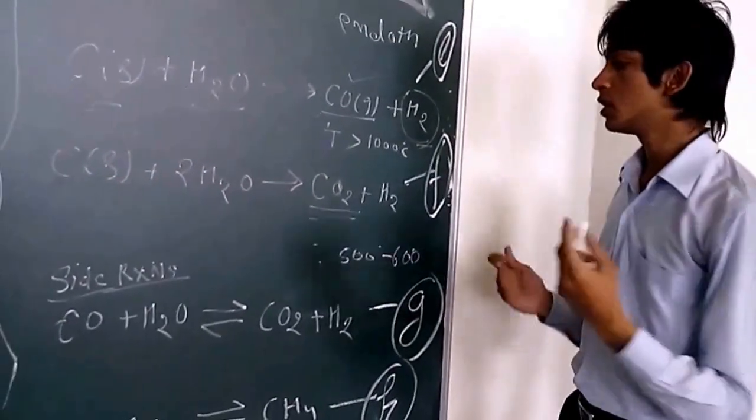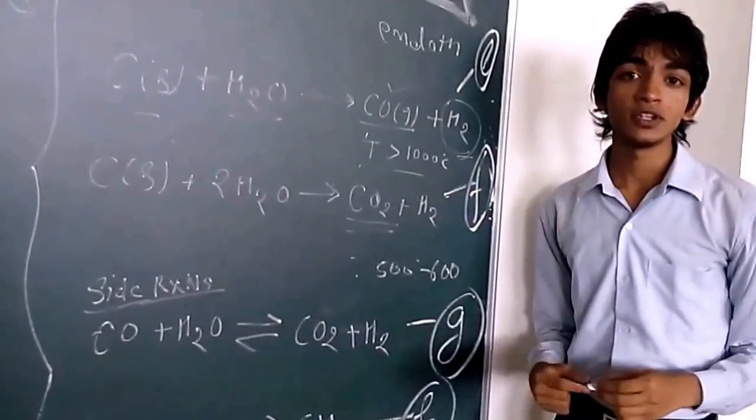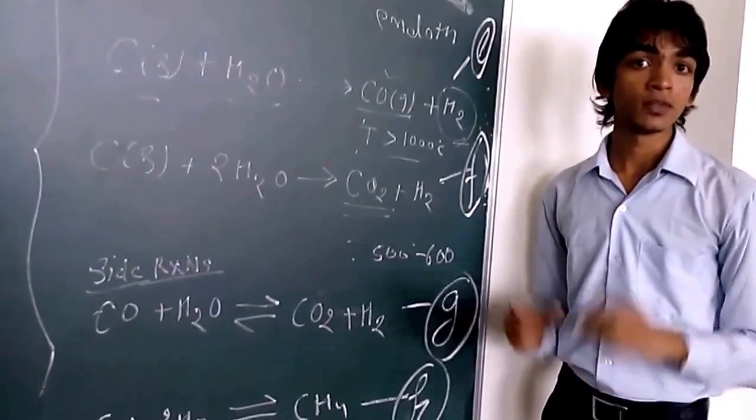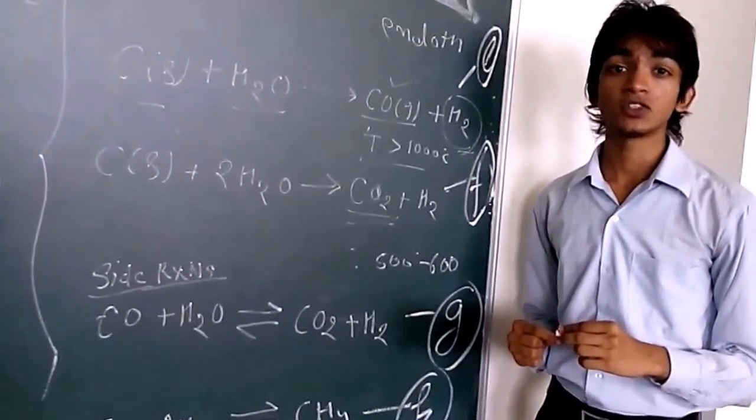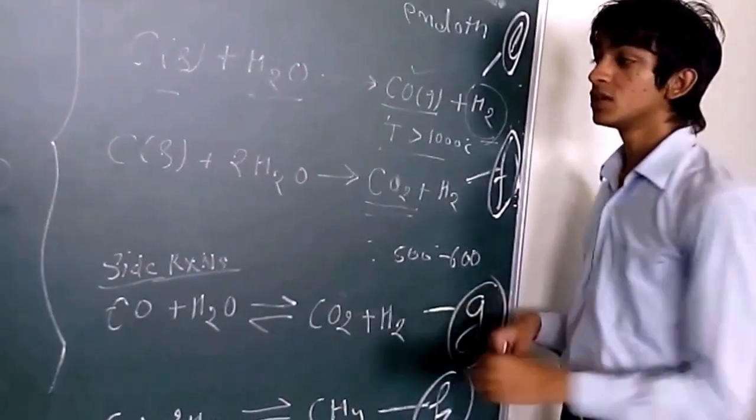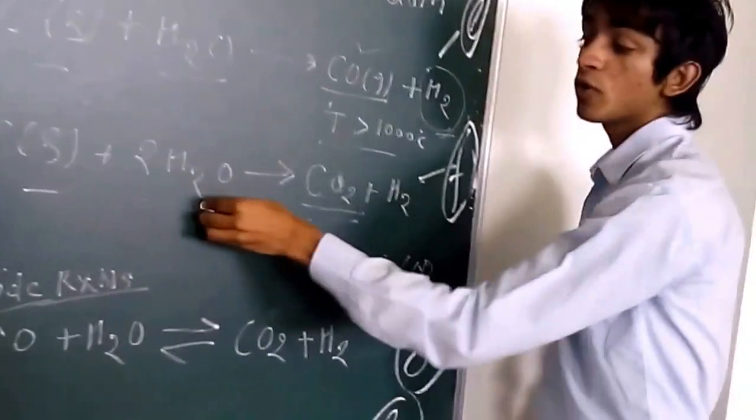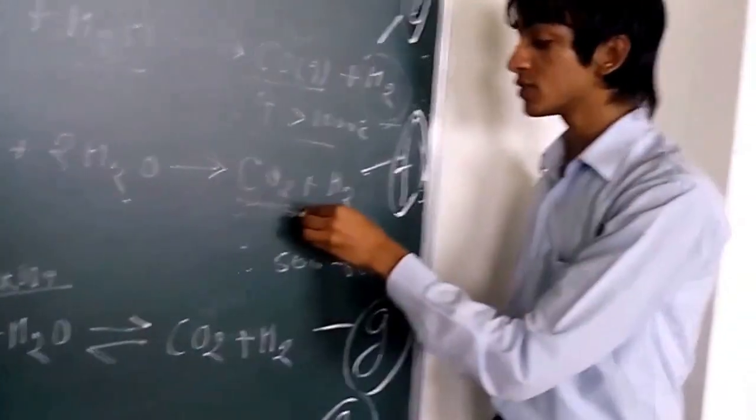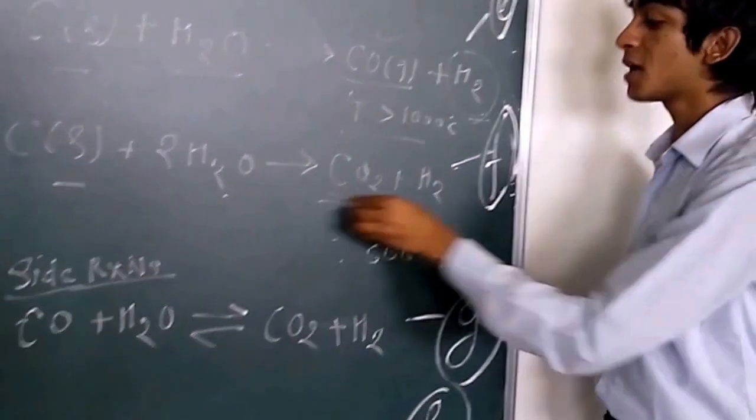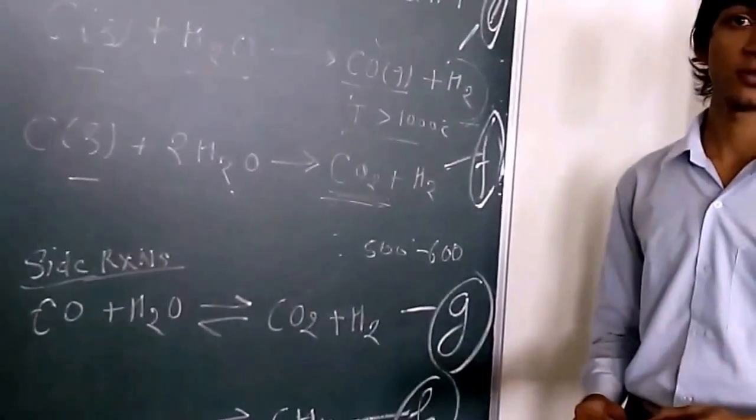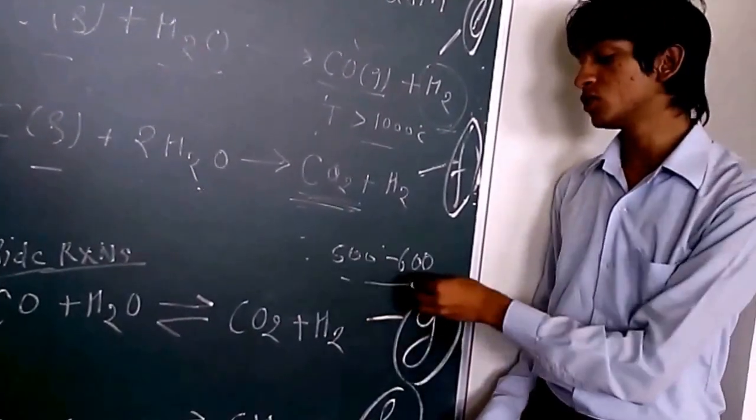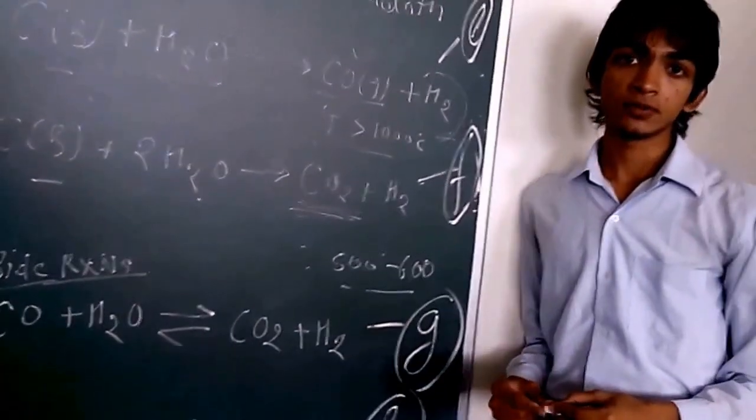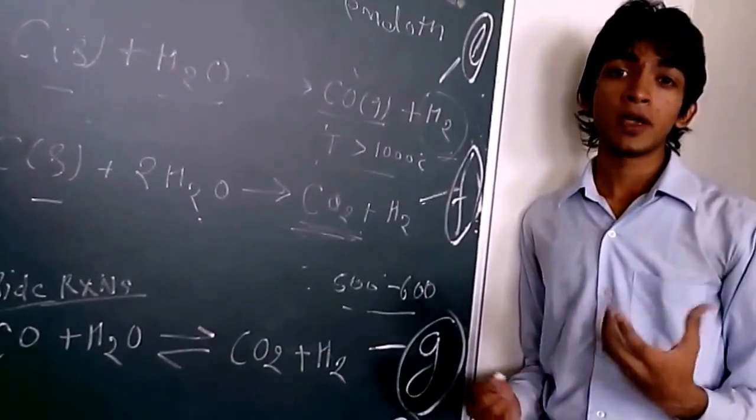This reaction occurs at temperature more than 1000. But another reaction is exothermic, which is: carbon plus 2 H2O will give you carbon dioxide and hydrogen. So carbon dioxide will be produced. For this reaction the temperature is 500 to 600. So this reaction will occur in the cooler part of the gasifier.